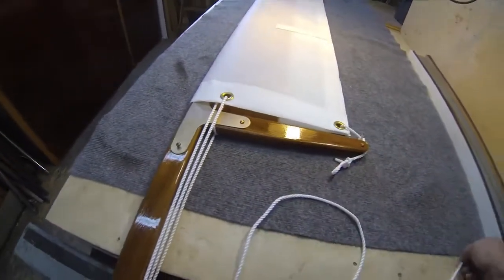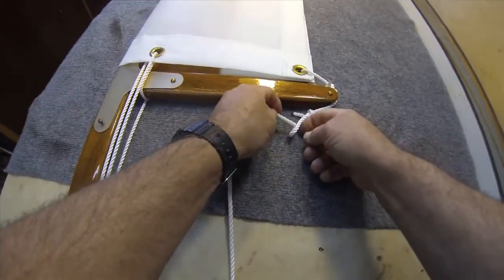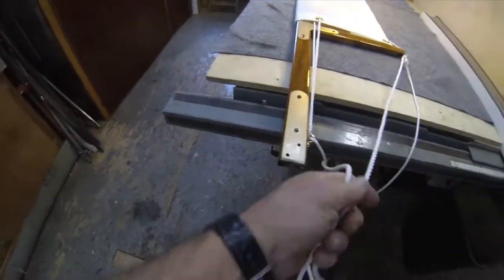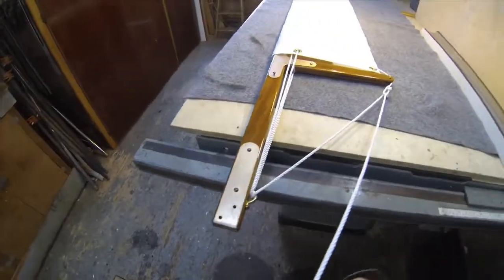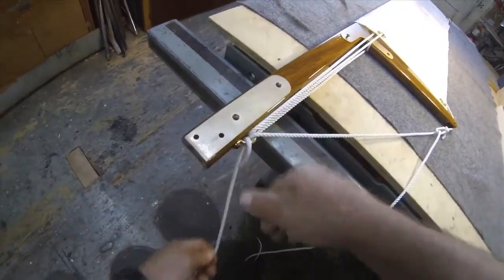Okay. Make the end of the line come through the bowline line bite, a loop there, and run the line back down through the fairlead again.